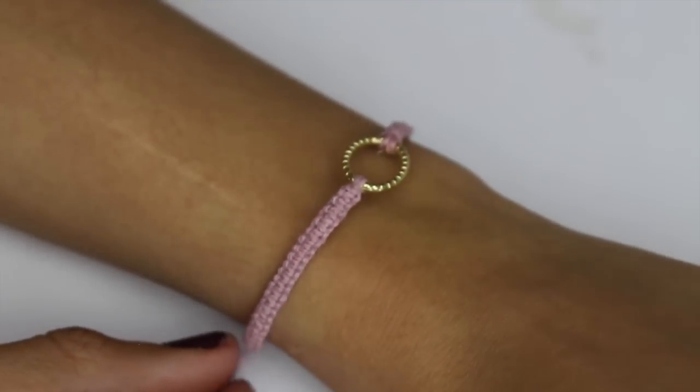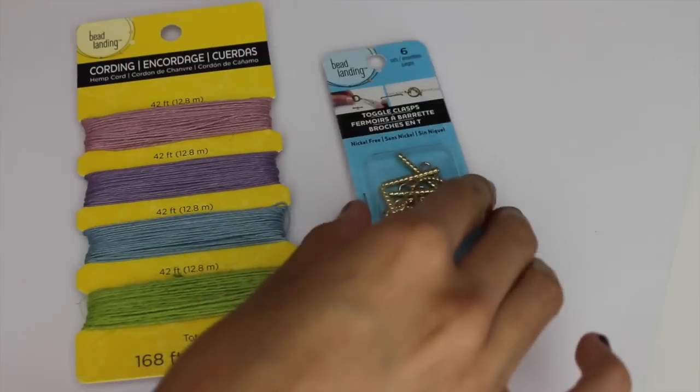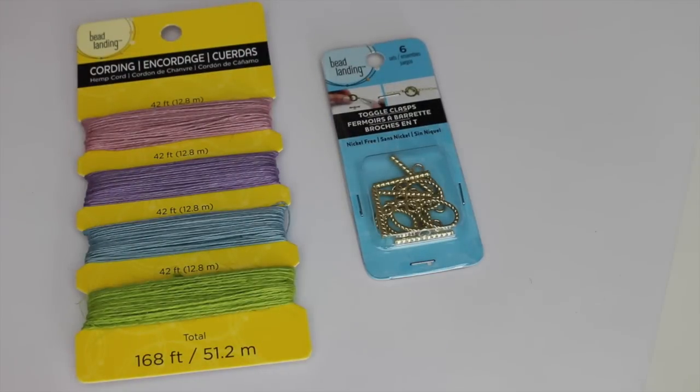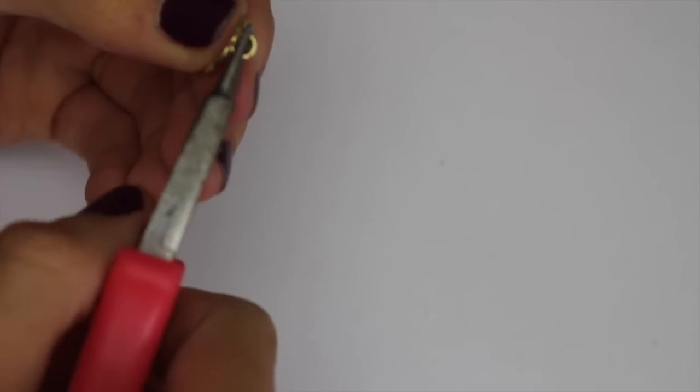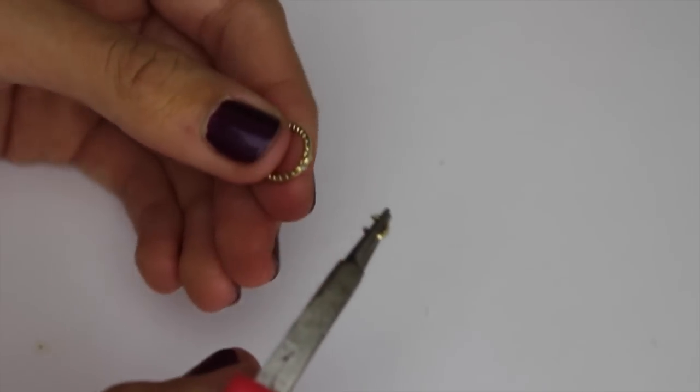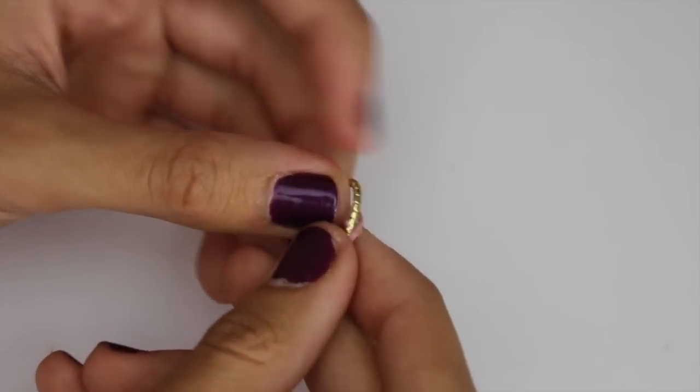For this first bracelet, you're going to need some colorful cording or hemp twine and some kind of rings or metal shapes for your bracelet. The ring that I had had a little loop on it, so I'm just cutting off the loop so I have a simple oval.